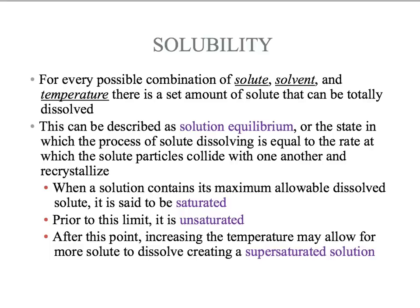Solubility is a description of how easily something forms a solution. There are some components to every solution that affect its ability to form: the type of solute, the type of solvent, and the temperature of the environment in which we're forming this solution. For every combination of those three parts, there is a limit to how much solute can be dissolved in a given amount of solvent. That means that even though water easily dissolves table salt, there's only so much you can add before it quits dissolving.